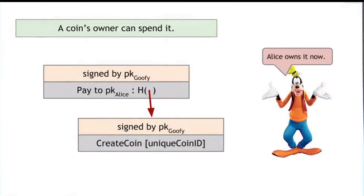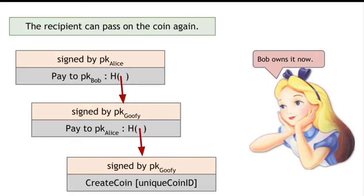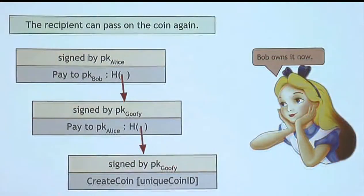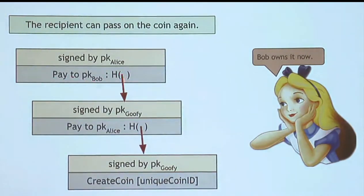Once this has happened, Alice owns the coin. Alice can prove that she owns the coin because she can present this data structure, which is validly signed by Goofy and points to a coin that was validly owned by Goofy. The correctness of this coin is self-evident in the system. Now Alice can move on and spend the coin as well. We have the creation of the coin signed by Goofy, then Goofy paid the coin to Alice via this hash pointer. Now Alice can create a statement saying pay this coin to Bob's public key with a hash pointer to the coin, and Alice signs that. Because Alice was the valid owner of the coin, which we can verify by walking this chain, the coin now belongs to Bob.